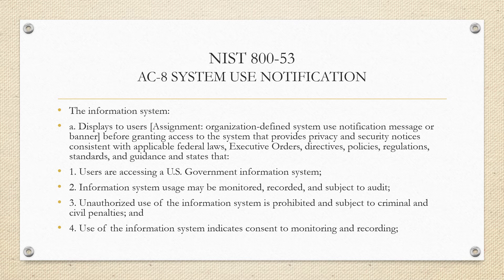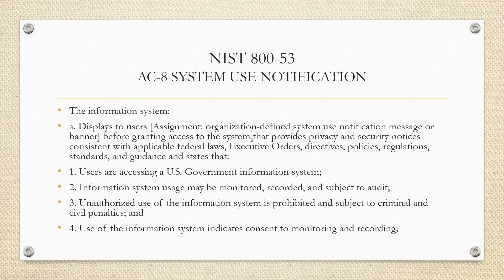Most people just click Enter and skip it — I doubt many people actually read it. But going deeper into the description, this is what is required within that system use notification. If you're a private organization, you won't say 'US government information system' — you'll say 'a system owned by ABC Corporation.' The notification states that the user is subject to audit, that usage will be monitored and recorded, so the user is aware of what they're getting into. You should also include the consequences of unauthorized use.